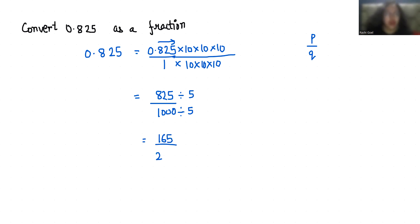165 divided by 5 is 33, and 200 divided by 5 is 40. So 0.825 in terms of fraction is 33 by 40.